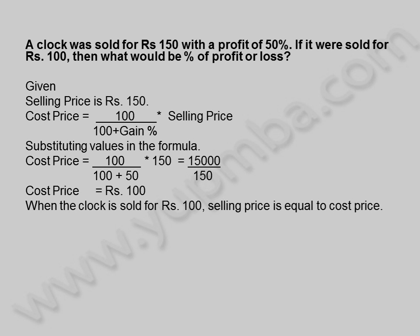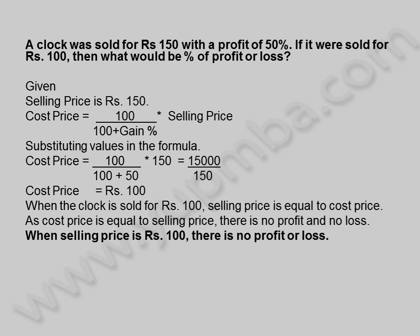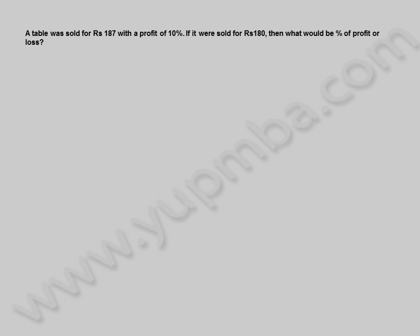Cost price is equal to 100 rupees. When the clock is sold for 100 rupees, selling price is equal to cost price. As cost price is equal to selling price, there is no profit and no loss. When selling price is 100 rupees, there is no profit or loss.